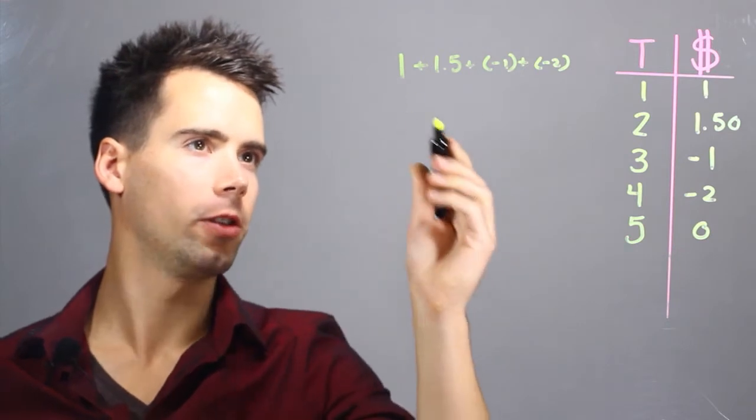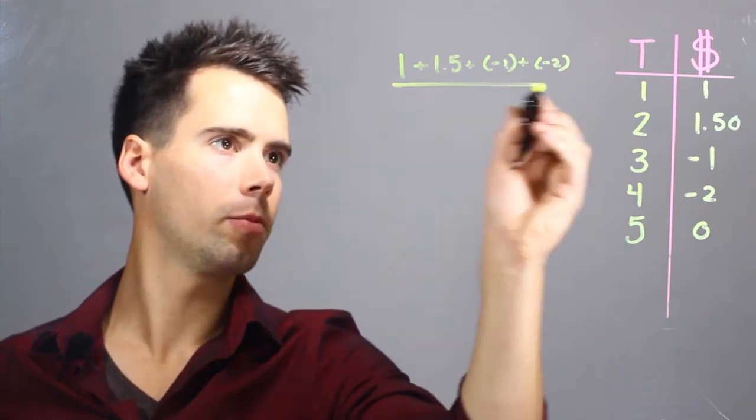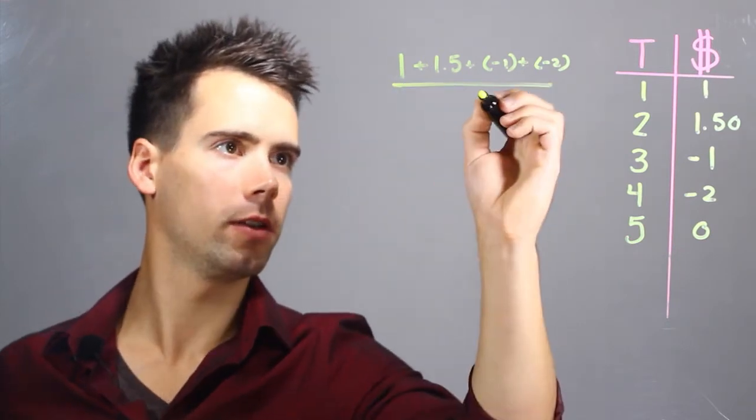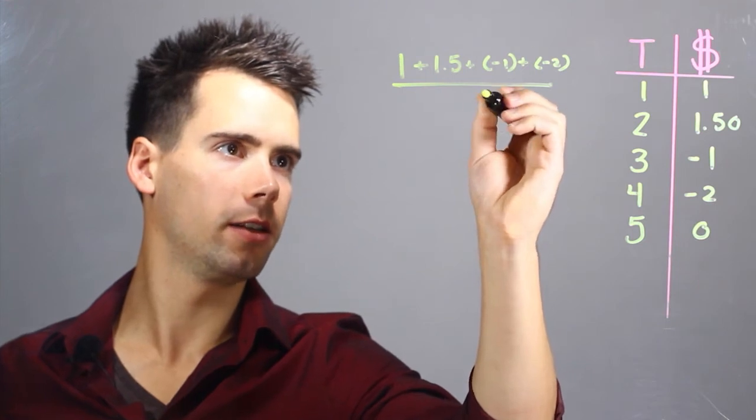And plus this last transaction is zero, which we don't even need to write. So it was a null transaction. And we can divide this by the total number of transactions. So in our case, it is five.